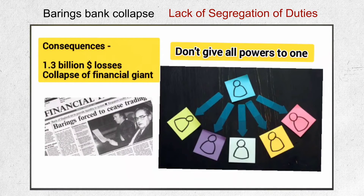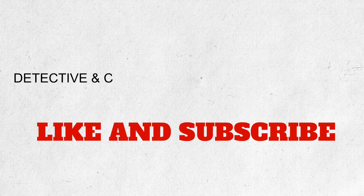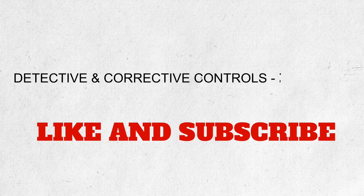So all organizations should implement segregation of duties. No individual employee should be in charge of creating a transaction, recording it, approving, and processing the payment — there should be different individuals for each step. These are some of the preventive controls. Now let's move on to detective controls.